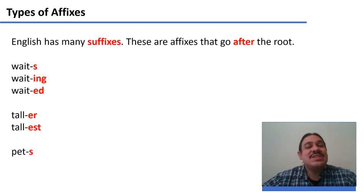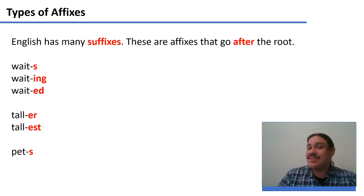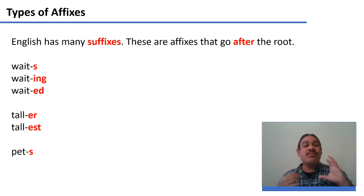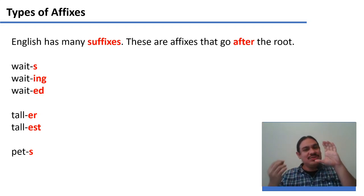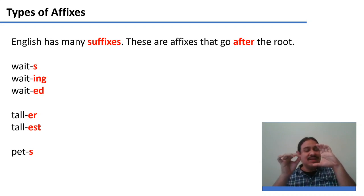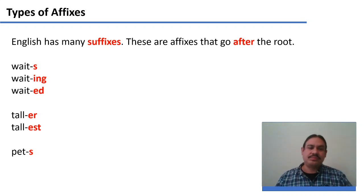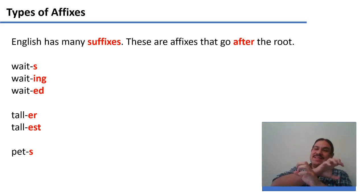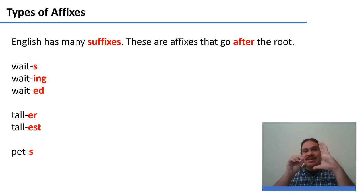English has a kind of affix called the suffix. These are affixes that go after the root. So you have a root like 'wait' and then add 's' or 'ing' after it: 'waits,' 'waiting,' 'waited.' In English you cannot have a word like 'inwaiting' where 'ing' precedes the root — 'ing' must come after the root.